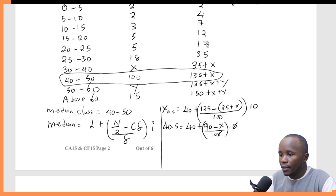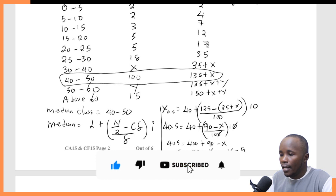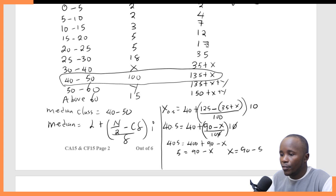If I multiply by 10, I can simplify the denominator, leaving 10 here. Multiplying everything by 10 to remove the denominator gives me: 405 is equal to 400 plus 90 minus X. Adding like terms: 405 minus 400 gives me 5, so 5 is equal to 90 minus X. Therefore X should be 90 minus 5, so X is equal to 85.